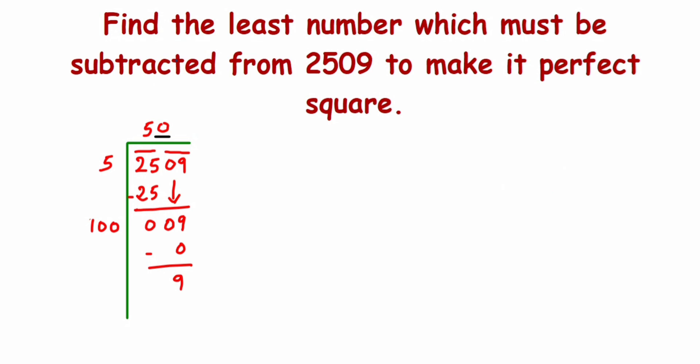From here we can write 2509 minus 9 will give you 2500. So 2500, you know, is a perfect square. How to find the square root? The square root of 2500 is nothing but whatever you got in the quotient, that is 50.